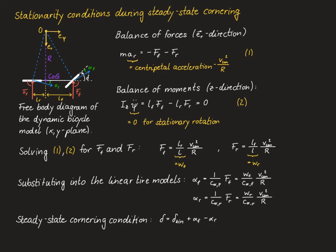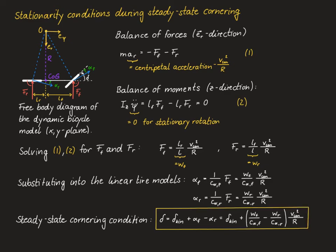These slip angle expressions are now substituted into the steady-state cornering condition stated at the beginning. Plugging in and factoring out V²/R gives the expression for the steady-state steering angle delta. We observe that the dynamic steering angle equals the kinematic steering angle plus a correction term depending on longitudinal speed. If the bracketed factor is positive, the steering angle increases with speed; if negative, it decreases with speed.